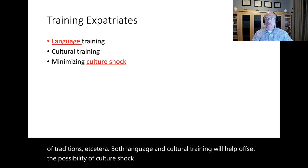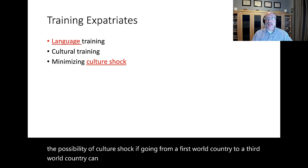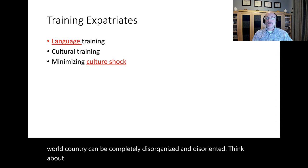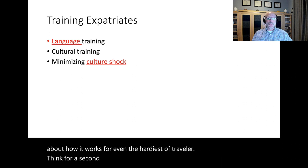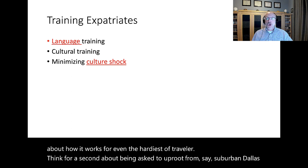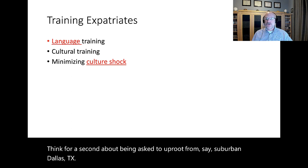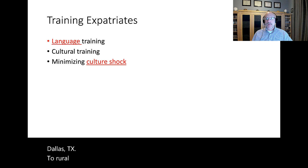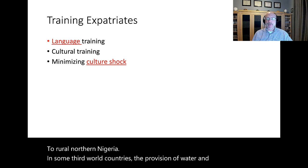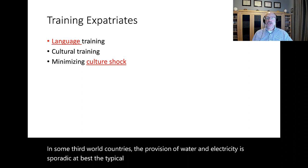If going from a first-world country to a third-world country, the experience can be completely disorienting even for the hardiest of travelers. Think about being asked to uproot from suburban Dallas, Texas, to rural northern Nigeria. In some third-world countries, the provision of water and electricity is sporadic at best — the typical suburbanite might find that shocking.